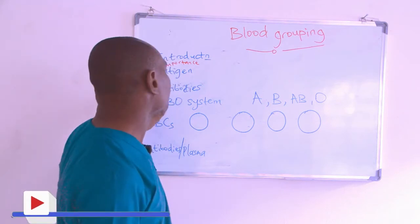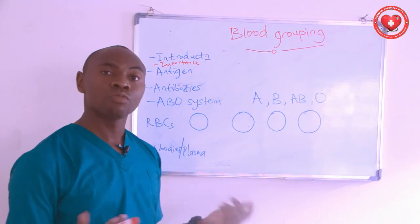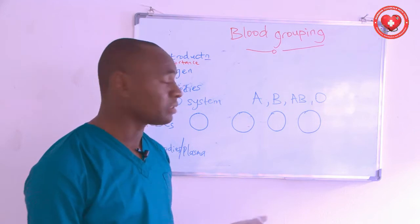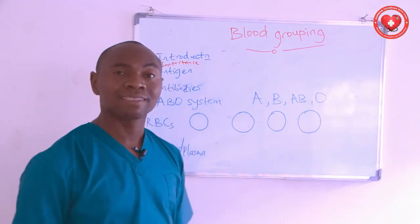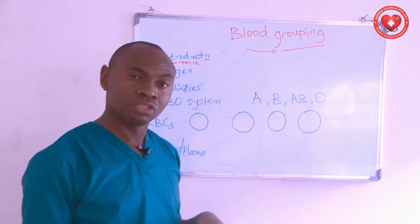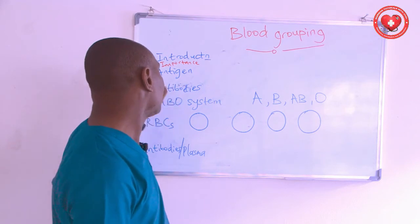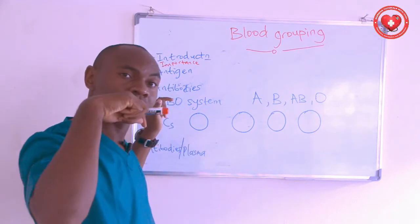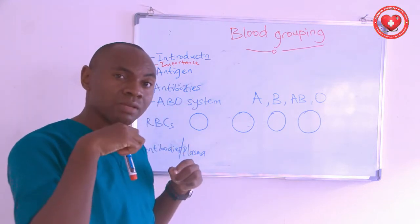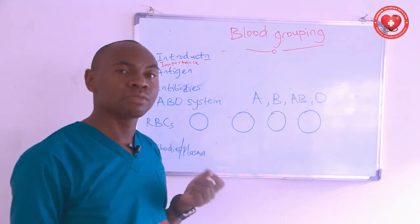On the other hand, we have antibodies — immunoglobulins or substances that help fight against foreign bodies, that help fight against antigens that are not naturally occurring in the body. The antigens are found on top of the red blood cell, while the antibodies are found in the plasma — the fluid, the liquid part of blood.